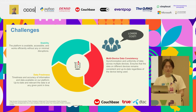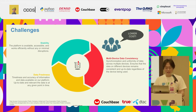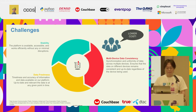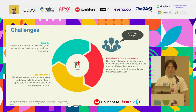What are our challenges right now? Number one is stability — not only availability but also performance. Every user needs to get the platform fast. Another challenge is data freshness, because we are a content delivery platform. It's not just about the content; it's also about user data. If you upload something, you want to see the data right away, or if the content team uploads a new clip, they want to see it as soon as possible.